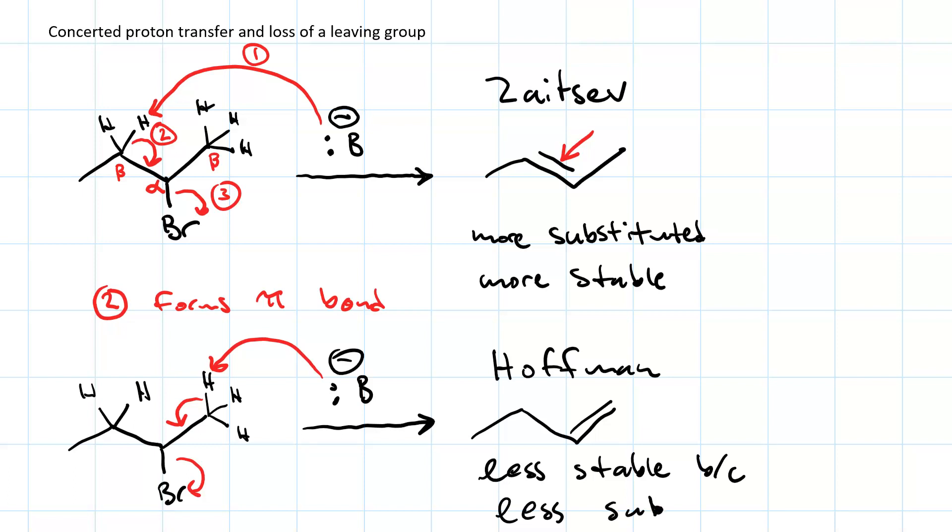Now, whether an elimination reaction is Zaitsev or Hoffman refers to the regiochemistry. Wouldn't it be great if you had control over the regiochemistry? It turns out you do. Your choice of base will determine the regiochemistry.